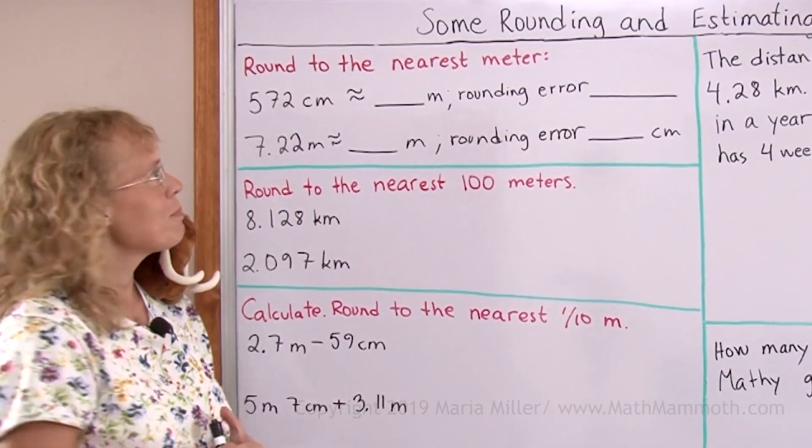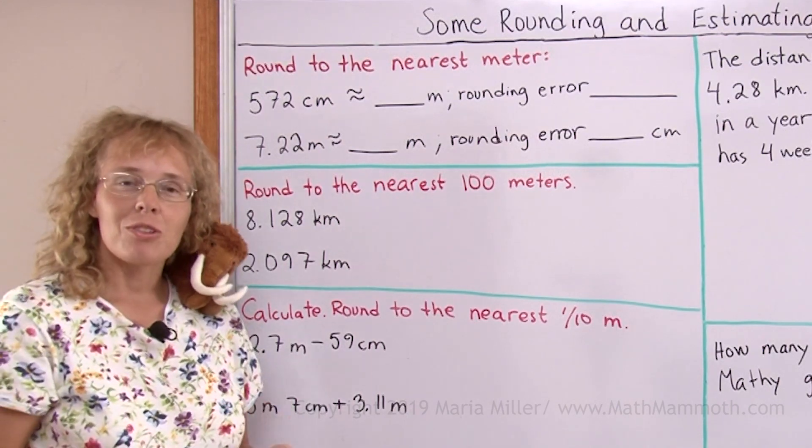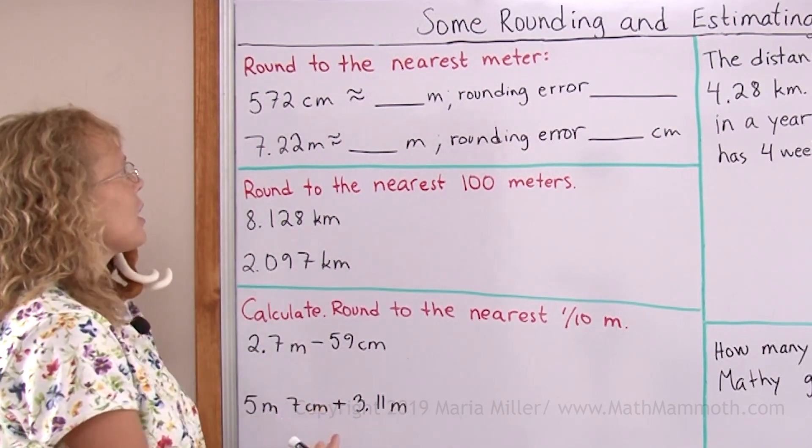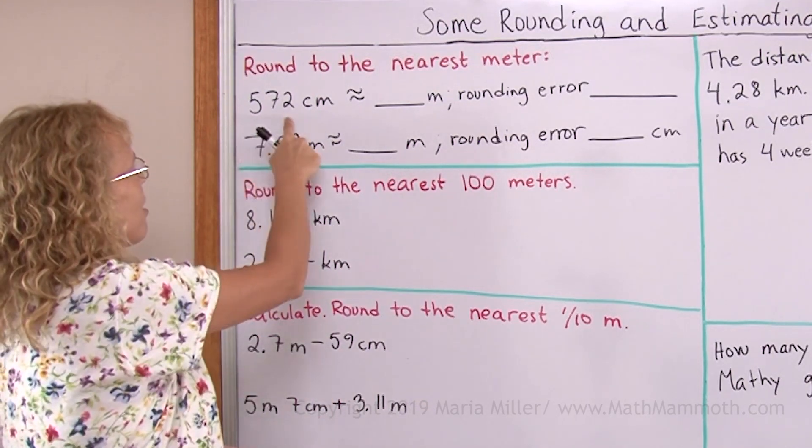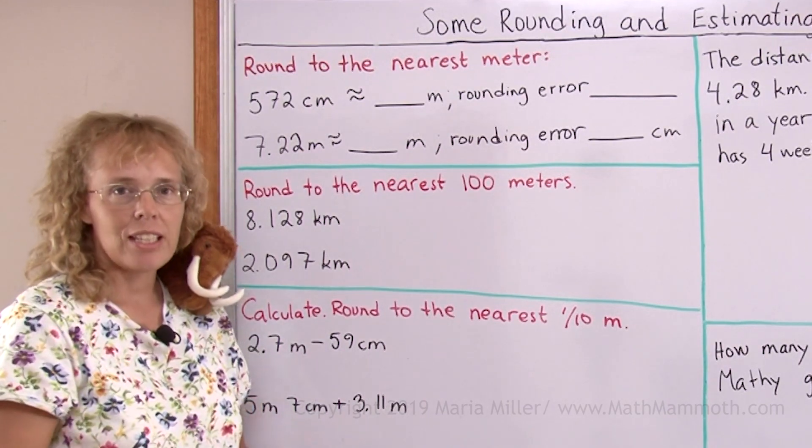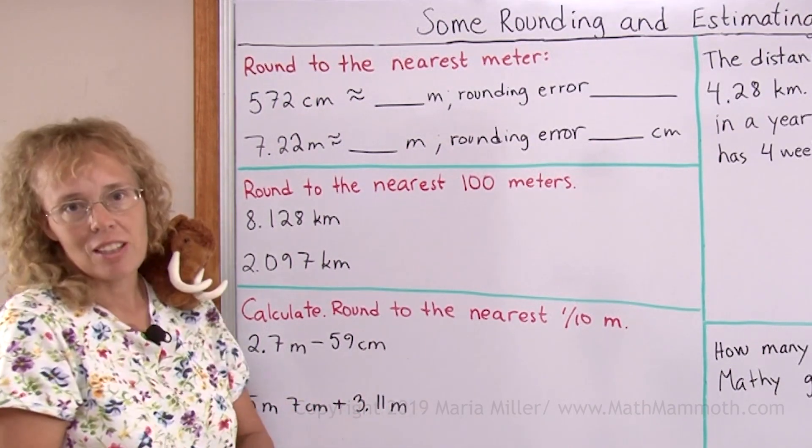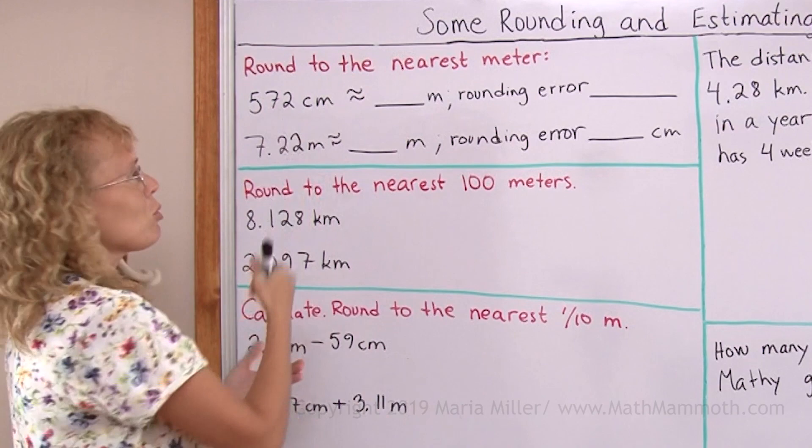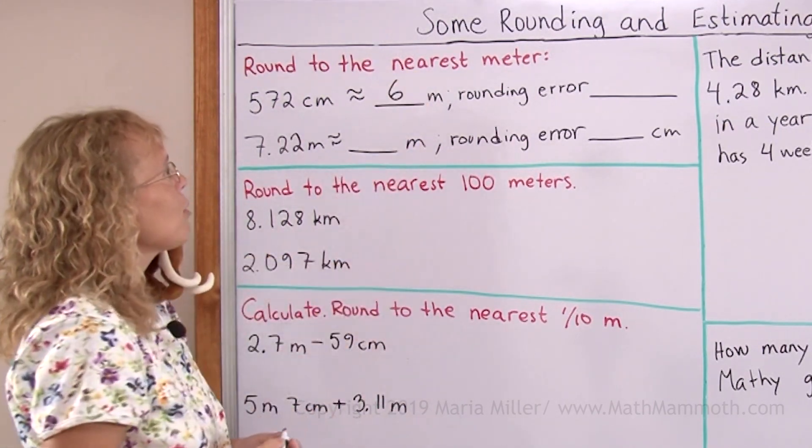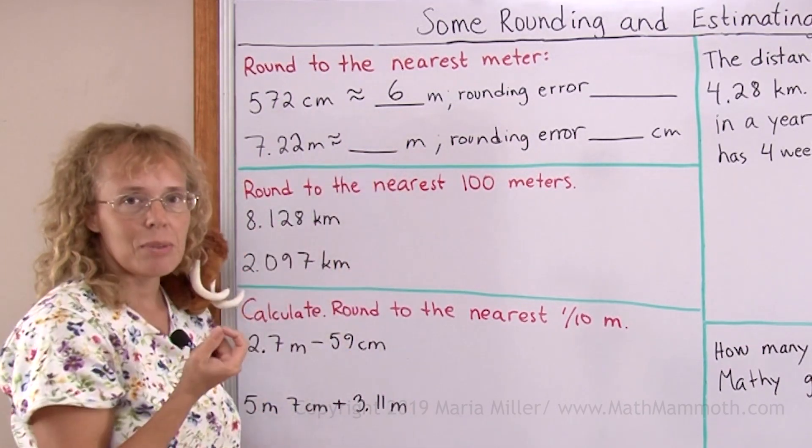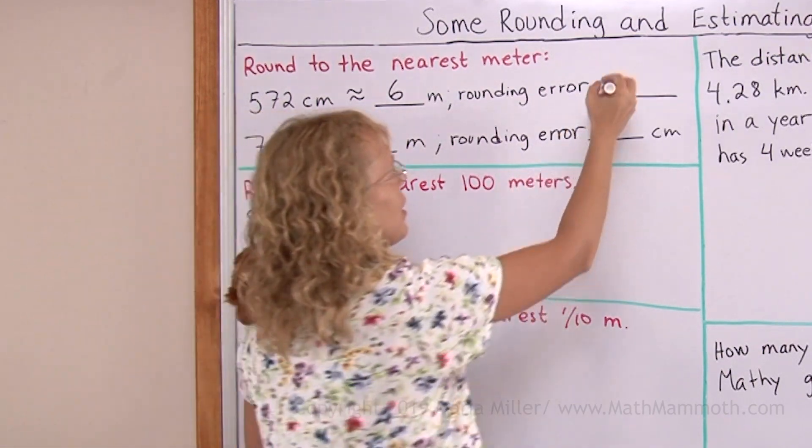Round to the nearest meter and then we find the rounding error. Okay, but this is given in centimeters, so how do you round to the nearest meter? You have to remember that 100 centimeters makes a meter, so 500 some centimeters is over 5 meters. 600 centimeters would be exactly 6 meters and so we are basically rounding to the nearest hundred. This would be rounded to 600 centimeters or 6 meters. The rounding error is the difference between this and this. The difference is 28 centimeters.